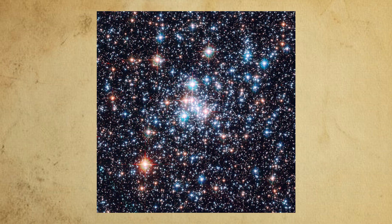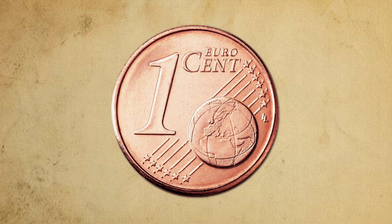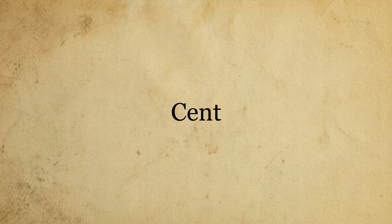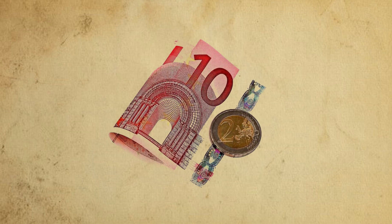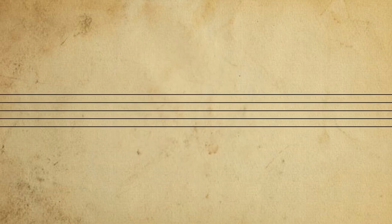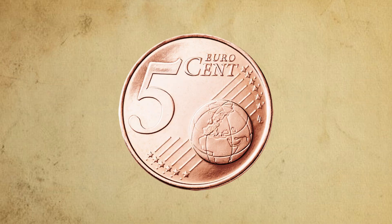12TET is actually so ubiquitous that the most common unit used to describe pitch deviation — the cent — is derived from it. A hundred cents make up one semitone in 12TET, so 1200 cents are an octave. Cents are used to describe deviations from the 12TET system. Most people can easily distinguish notes up to about 5 cents difference.